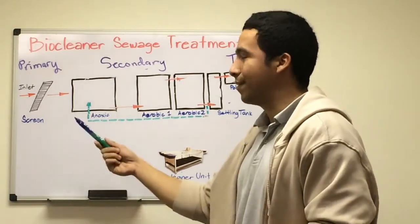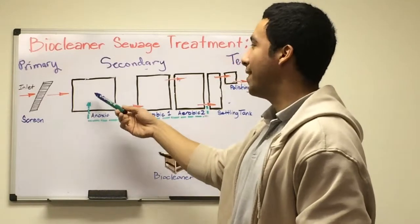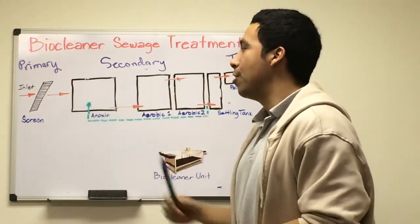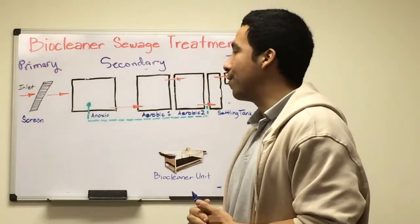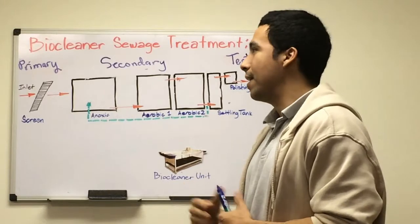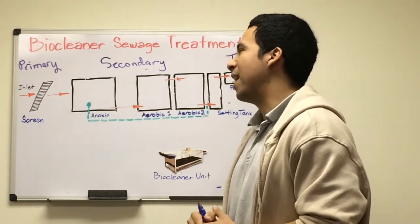Our first treatment process using biocleaner is in the secondary process: anoxic treatment. We provide anoxic treatment for dampening the incoming waste stream due to variations in pH or temperature. However, in domestic sewage it'll be very minimal.